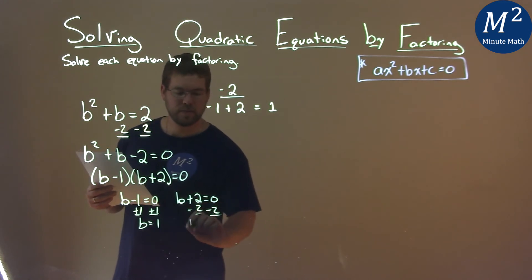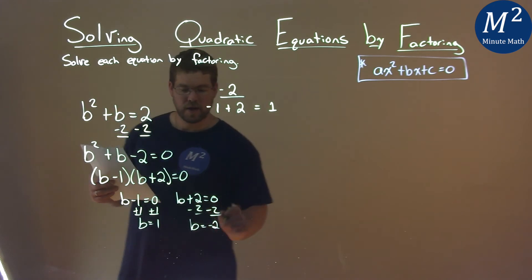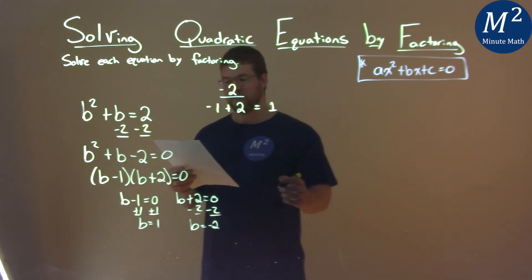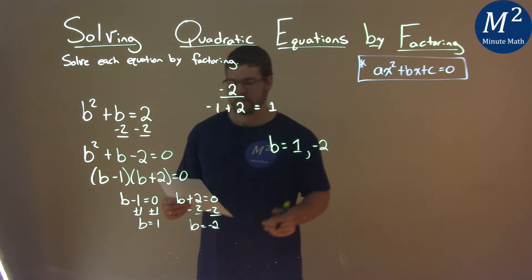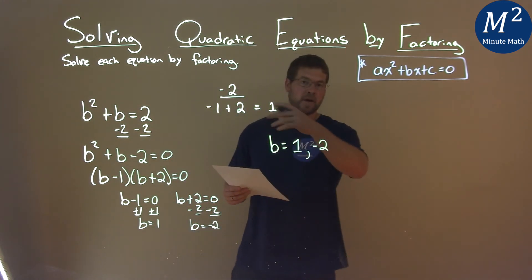I subtract 2 from both sides, and b equals negative 2. So then I have my final answers we can write as a single statement: b equals 1 and negative 2, and that is our final answer.